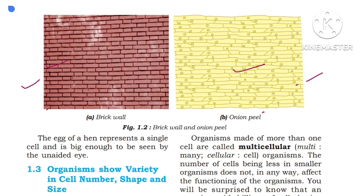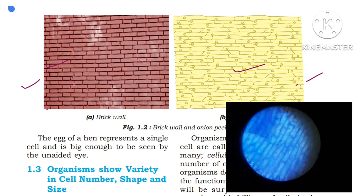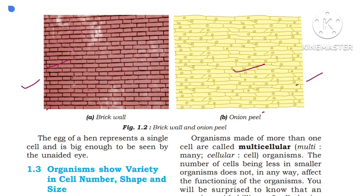Cells are the structural and functional unit of an organism because all living organisms are made up of cells, and all the basic functions of an organism occur in the cell. A group of cells forms a tissue to perform a specific function. Different tissues combine to form an organ, and different organs together form an organ system, which ultimately forms an organism. Just as bricks are put together to construct a building, the body of a living organism is also made up of cells. Organisms show variety in cell number, shape, and size.